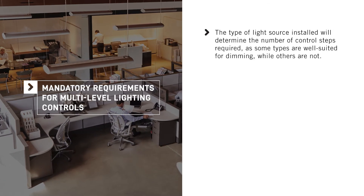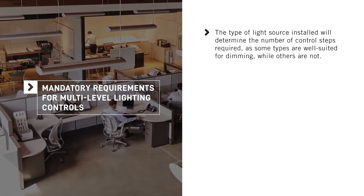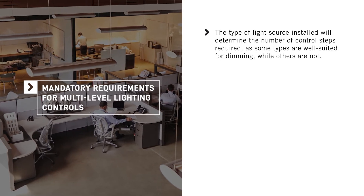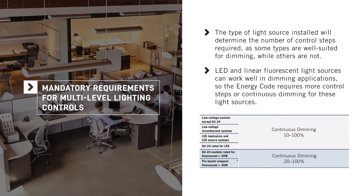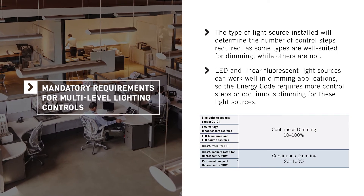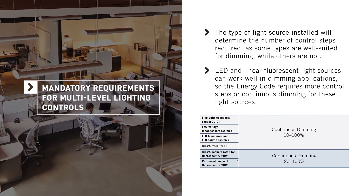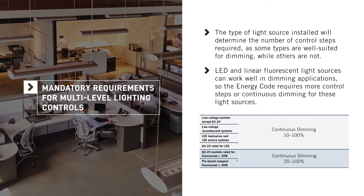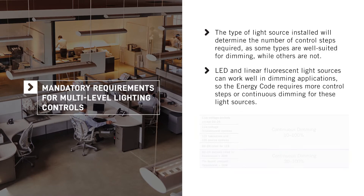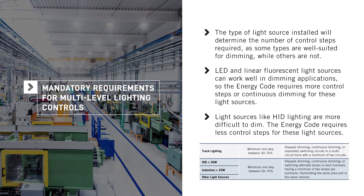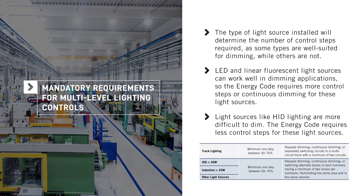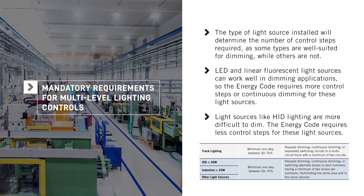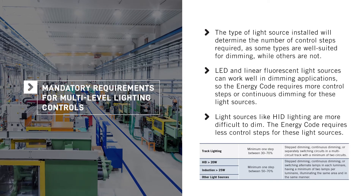The type of lighting source installed will determine the number of control steps required. Some light sources are well suited for dimming, while others are not. For example, LED and linear fluorescent light sources can work well in dimming applications; therefore, the Energy Code requires more control steps or continuous dimming when using these light sources. Light sources like high intensity discharge, or HID lighting, are more difficult to dim, and the Energy Code requires fewer control steps for these light sources.